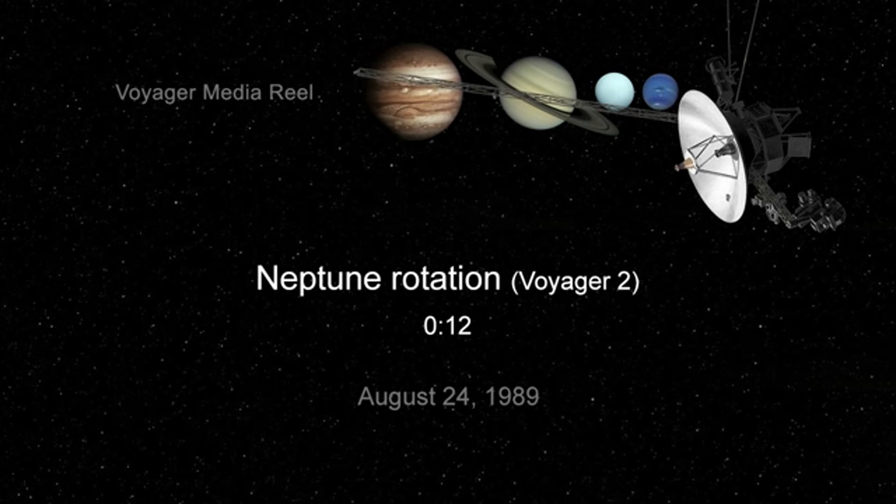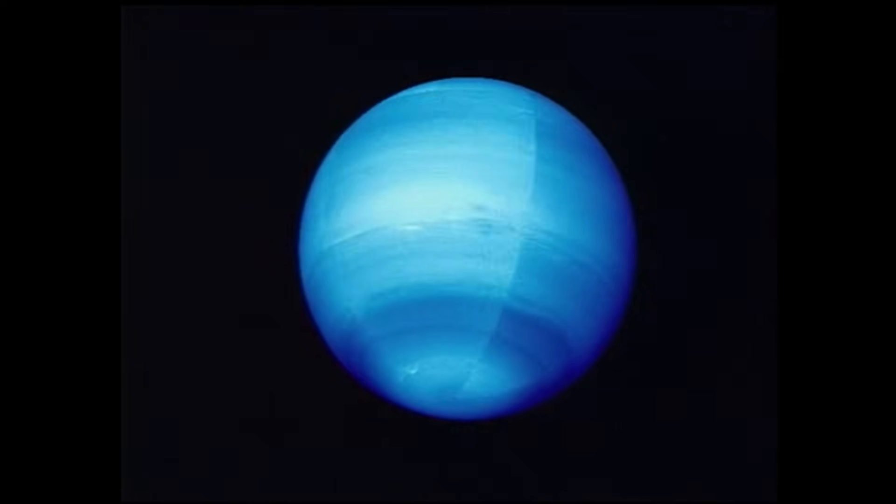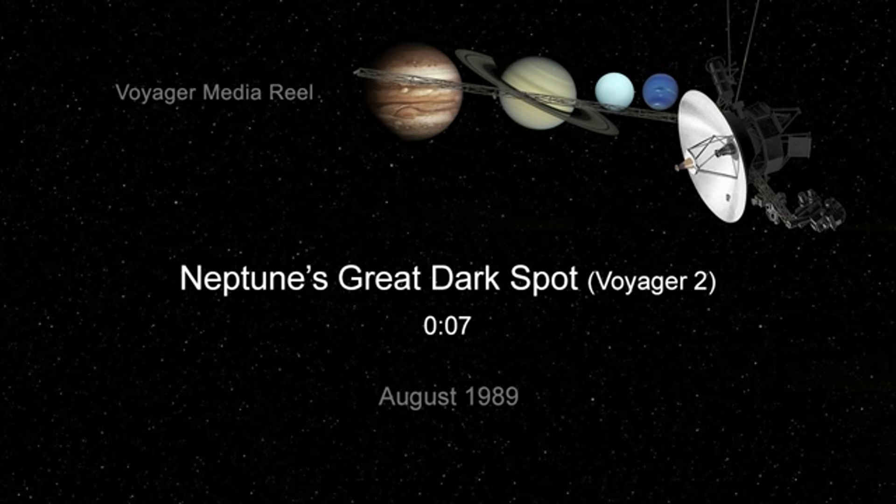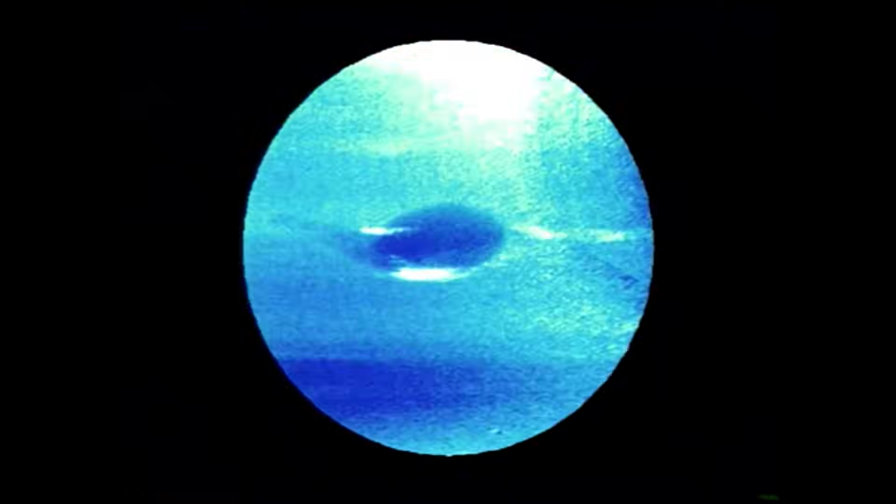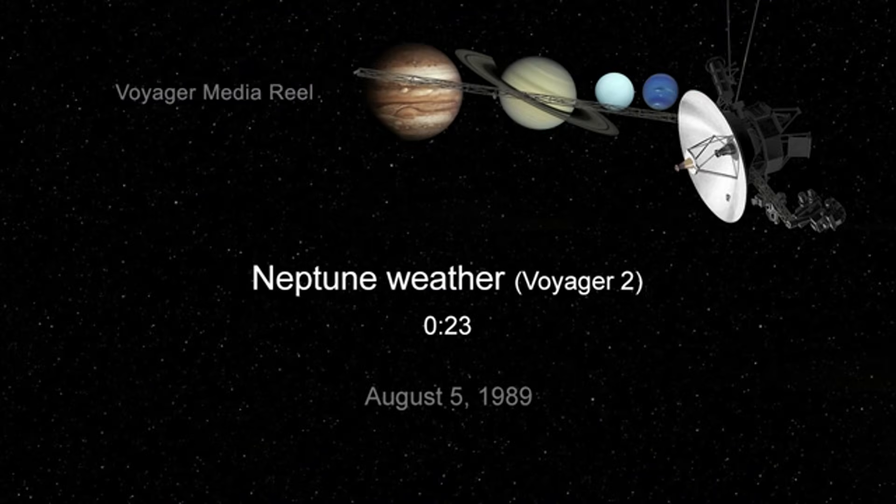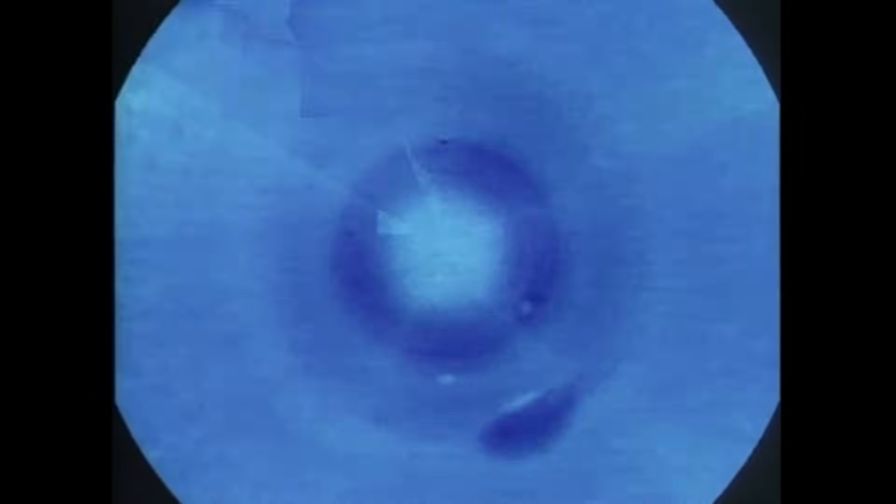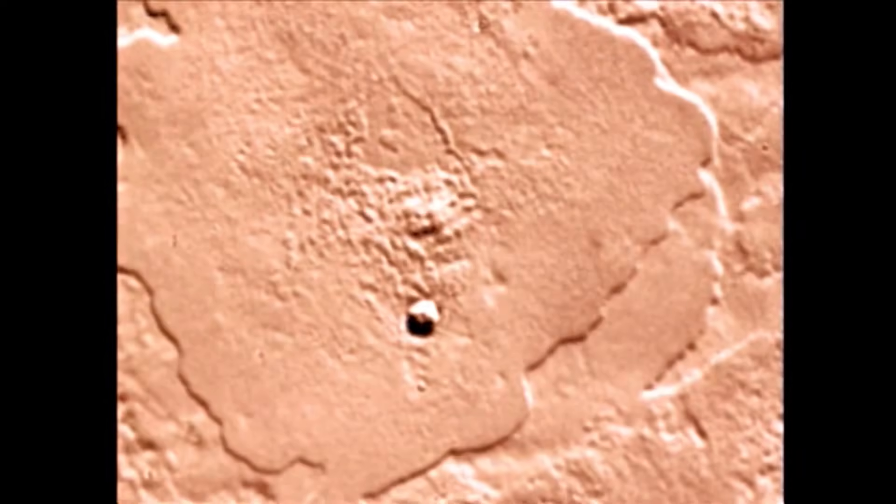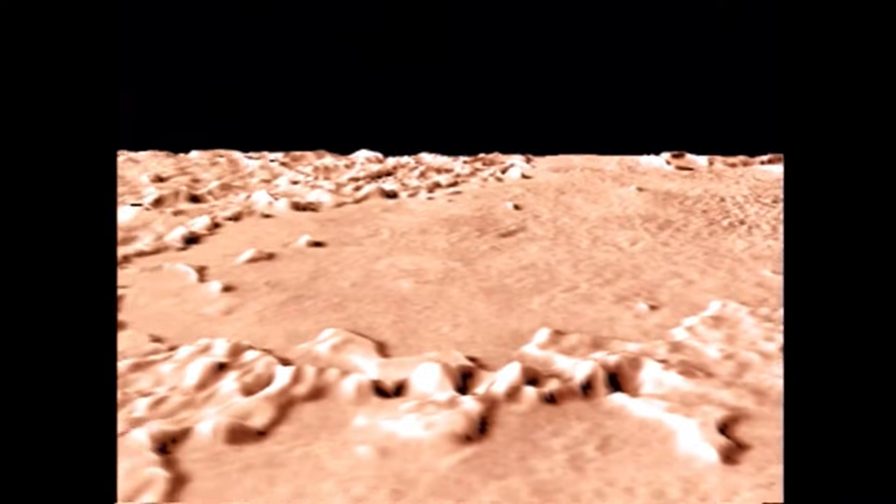Neptune, the last planet visited. In the family portrait, Neptune appears as a tiny, barely visible blue smudge. A world so distant that sunlight takes four hours to reach it. This is the only image Voyager 1 ever captured of Neptune. But Voyager 2, its twin spacecraft, did fly past it. On August 25th, 1989, Voyager 2 swept just 4,850 kilometers, 3,000 miles above Neptune's cloud tops. It saw a world driven by towering storms, swirling dark spots, and the fastest winds ever recorded, reaching up to 2,400 kilometers per hour, 1,500 miles per hour.